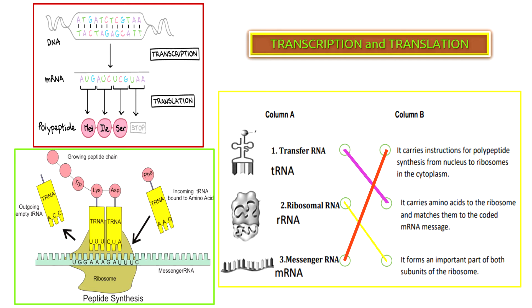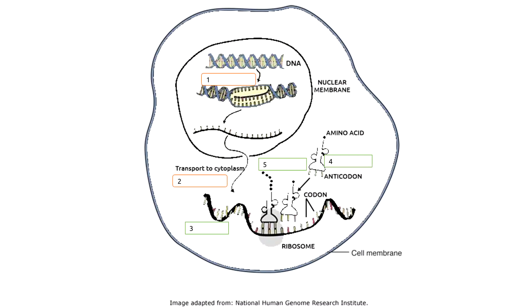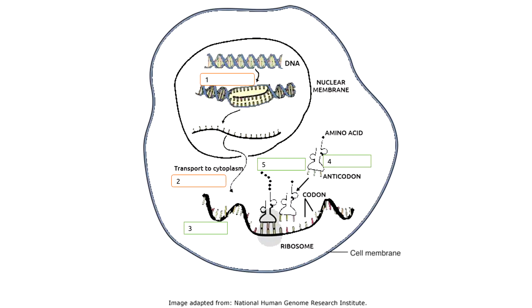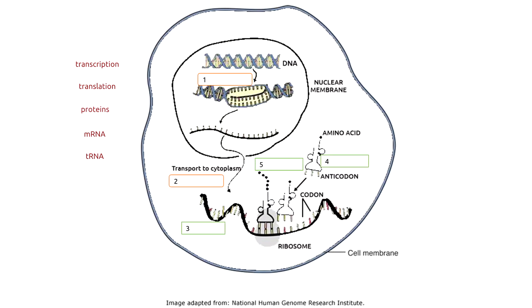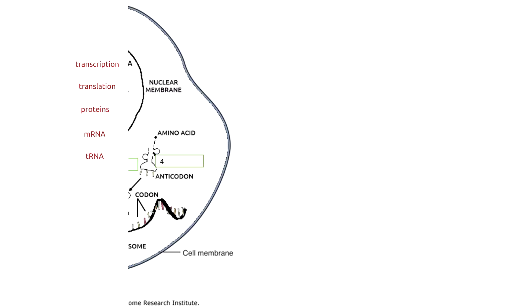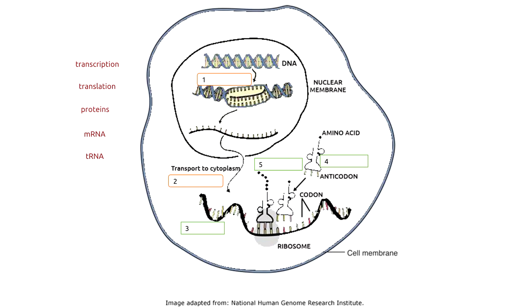In the next activity, you will label the diagram and explain the process of protein synthesis using the terms displayed on the screen. In Part A of the activity, the answer for number 1 is transcription, for number 2 is translation, for number 3 is mRNA or messenger RNA, number 4 is tRNA or transfer RNA, and for number 5 is proteins.